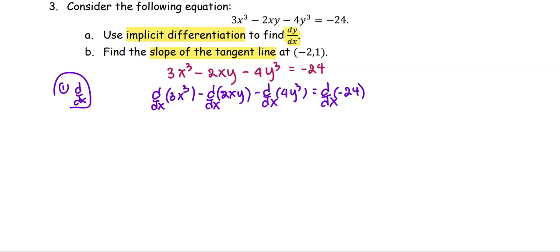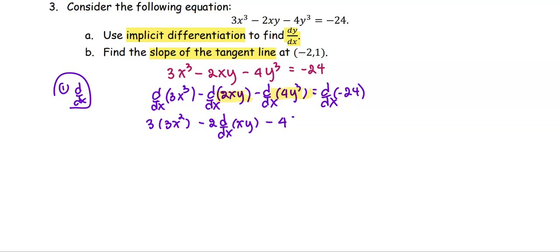The term involving y is the one where we have to apply the chain rule. For the first term, we get 3 times 3x², which is the derivative of 3x³. For the second term, we see 2 times xy, treating 2 as a constant multiple times the derivative of the product xy. For the third term, we have constant multiple 4 times the derivative of y³, which is 3y² multiplied by dy/dx. The right-hand side is 0 because negative 24 is a constant.